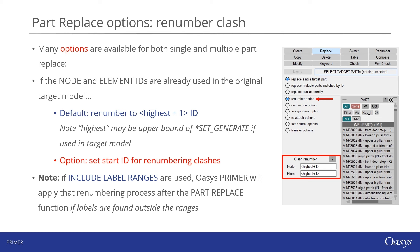It's worth spending some time talking through the various options that come with Primer's part replace tool. First, renumbering options: it may be the case that node and element IDs in your source parts are already in use in your target model. Primer will default to renumbering the clashing nodes and elements, starting with the highest-plus-one ID, unless you provide another starting ID. If include label ranges are used, Primer will apply that renumbering process after the part replace function if labels are found to be outside the ranges.